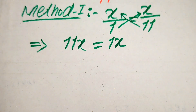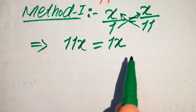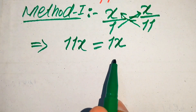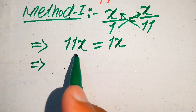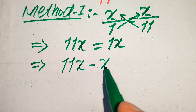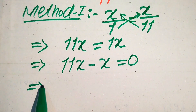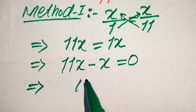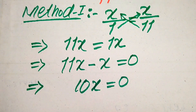Because we are solving for the values of x, we move the variable term from the right hand side to the left hand side. This x becomes minus x on the left hand side, and the whole equation equals 0. So 11x minus x becomes 10x equals 0.